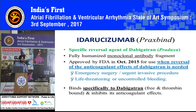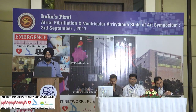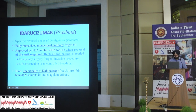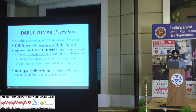Edarucizumab is available by the brand name Praxbind. It is a specific reversal agent for dabigatran — a fully humanized monoclonal antibody fragment which has been approved by the FDA in October 2015. It is approved for reversal of the anticoagulant effect of dabigatran in case of emergency surgery, urgent invasive procedures, or in case of life-threatening or uncontrolled bleeding. It binds specifically to dabigatran — both to the free and the thrombin-bound dabigatran — and inhibits its anticoagulant effect.